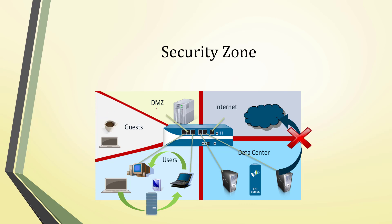Let's understand security zones more deeply. I have zones: DMZ, Guest, Users, Data Center, and Internet, all on this Palo Alto Networks firewall. In the Users zone and Data Center zone I have two interfaces each. Traffic between interfaces in the same zone is allowed by default, while traffic between different zones — like Data Center to Internet — is blocked by default.